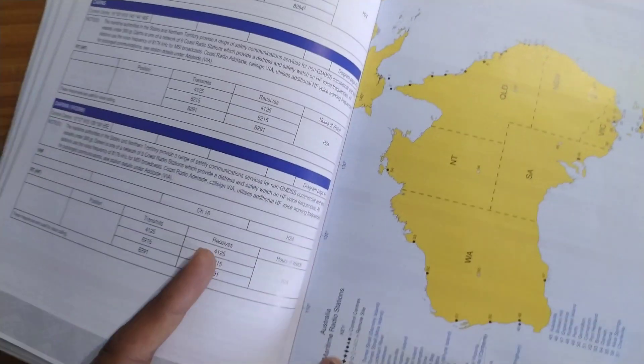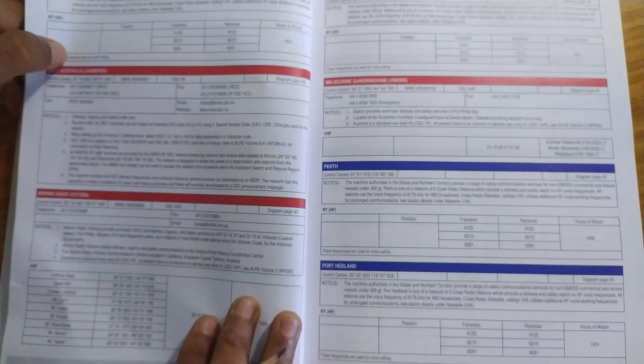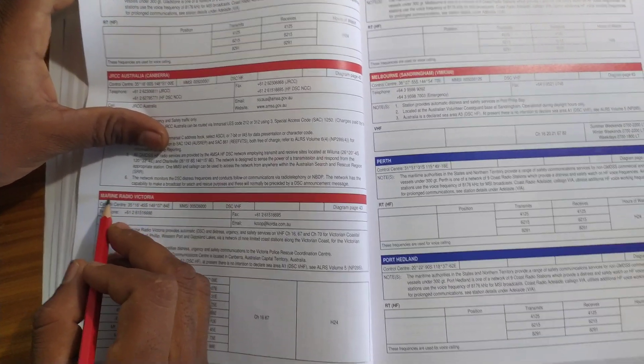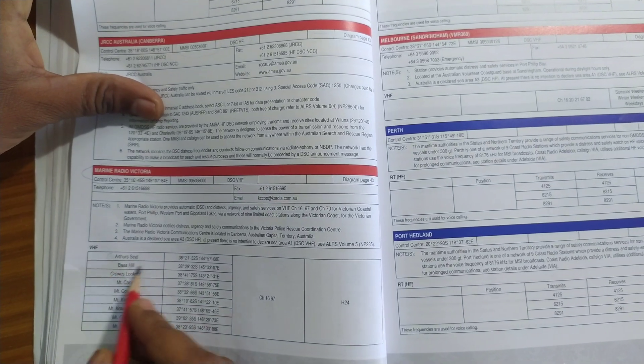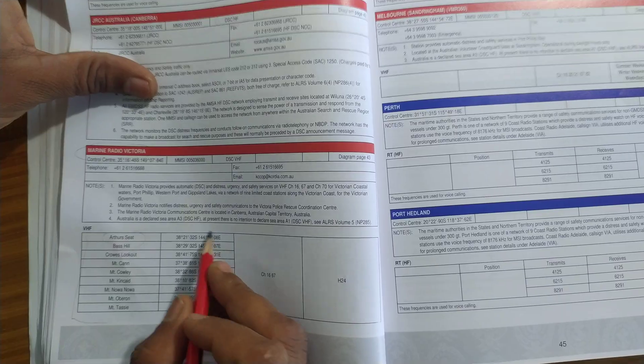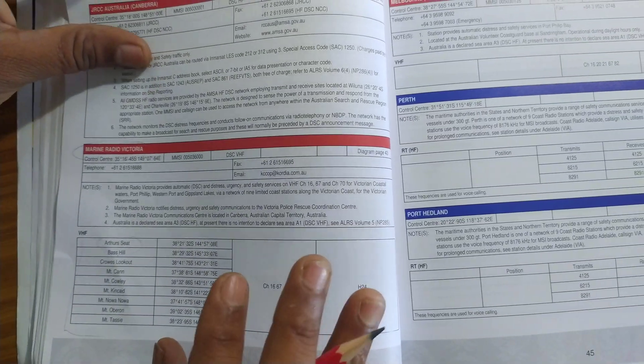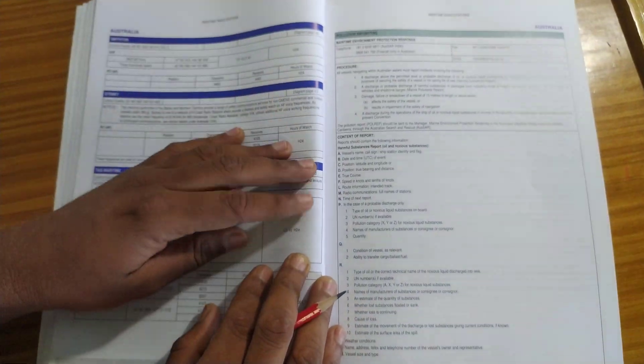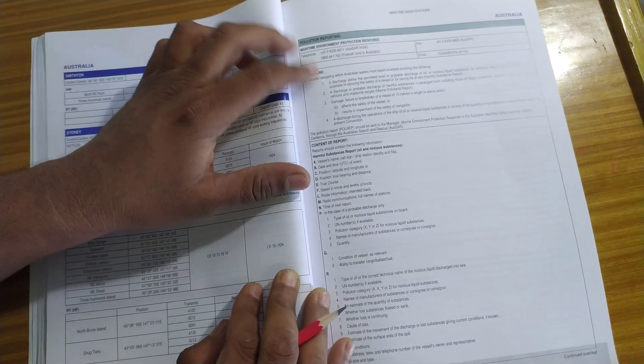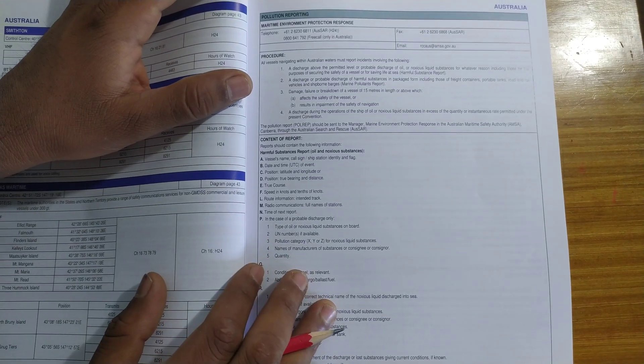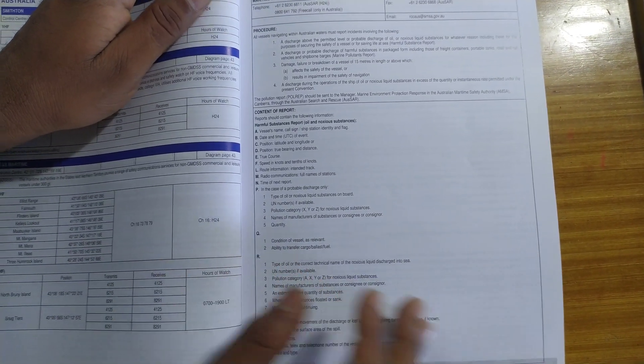Also, next comes - this Canberra is also not having any remote sites. But for Marine Radio Victoria you can see there are all these remote sites with their positions. This is how you will read it. After you finish this, towards the end in Australia they will give you the pollution reporting, how to report pollution. Remember, this is for the whole of Australia, so whichever station is near you can report it.